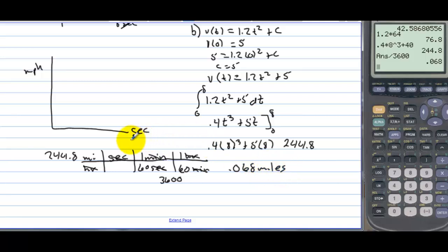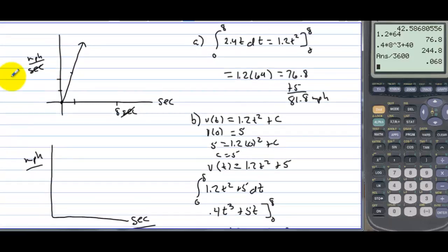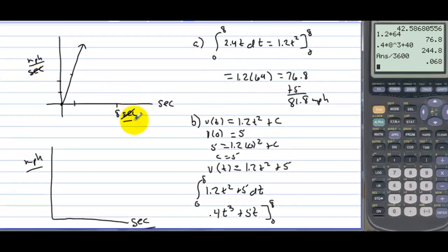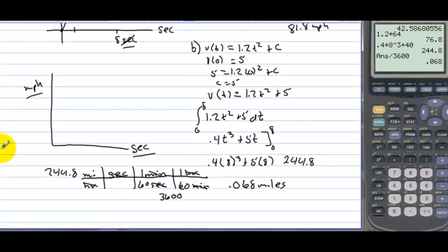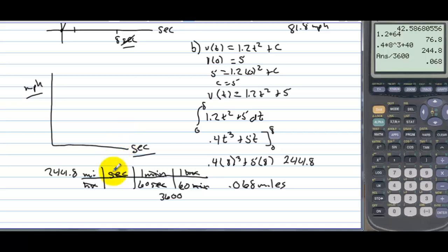When you do these problems, you really have to pay attention to the labels. Sometimes the labels cancel out nicely, like seconds. But when velocity is in miles per hour and you're integrating over seconds, the labels don't cancel as nicely, so you have to convert them manually.